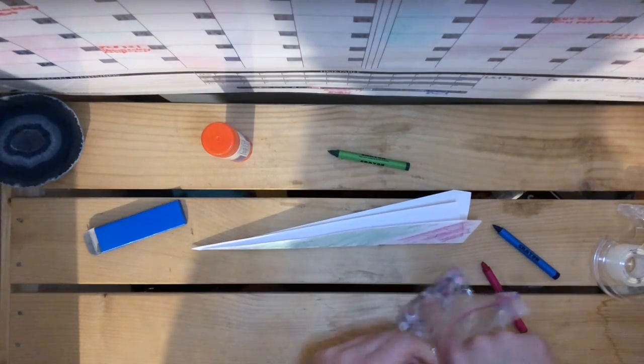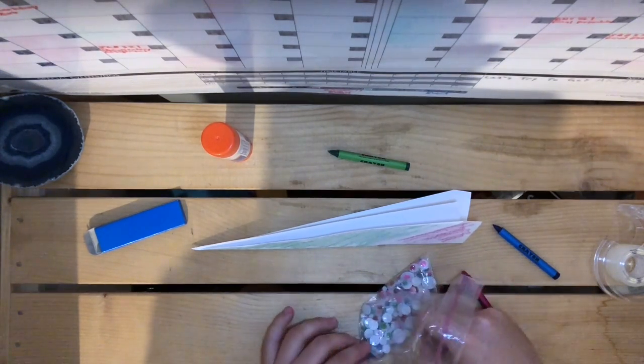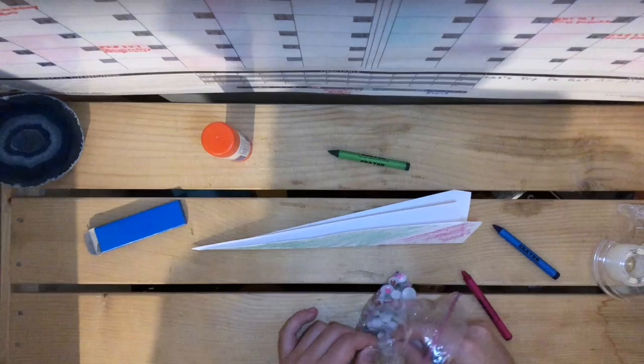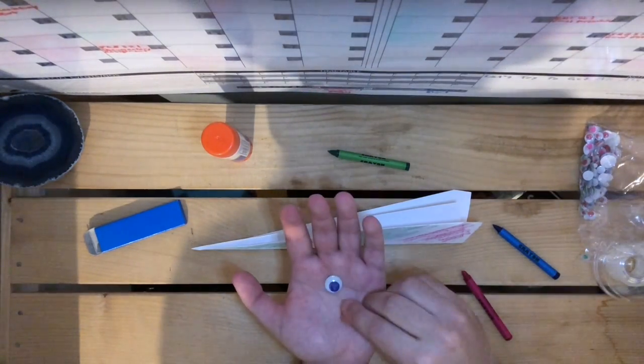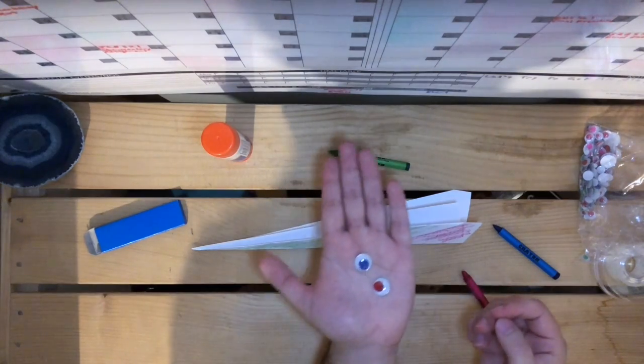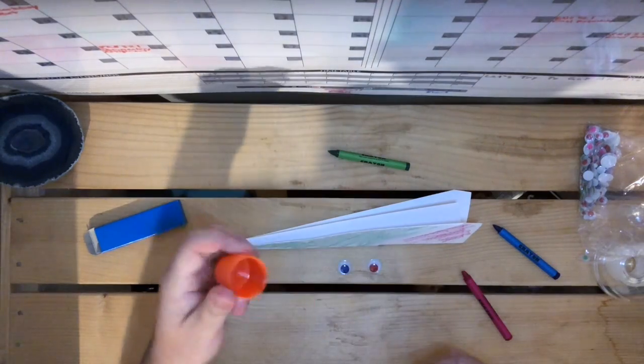I'm going to get googly eyes. Let's see, let's do a red one and a blue one. I have my two googly eyes there. I have my glue stick here.